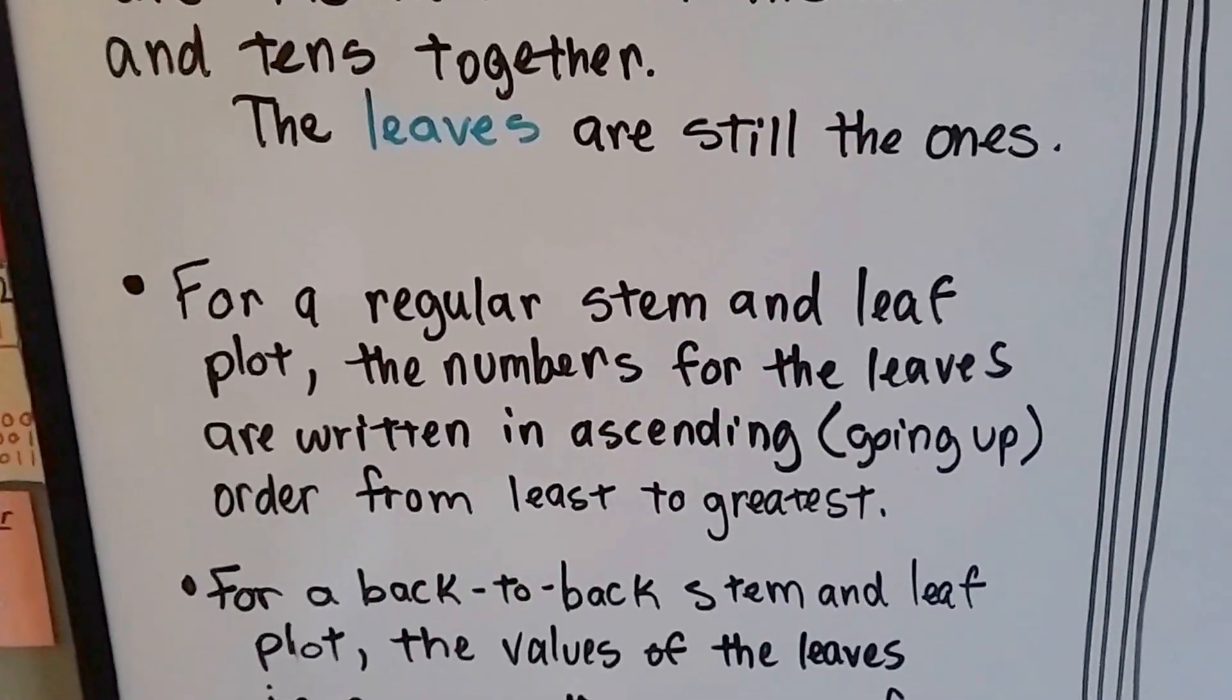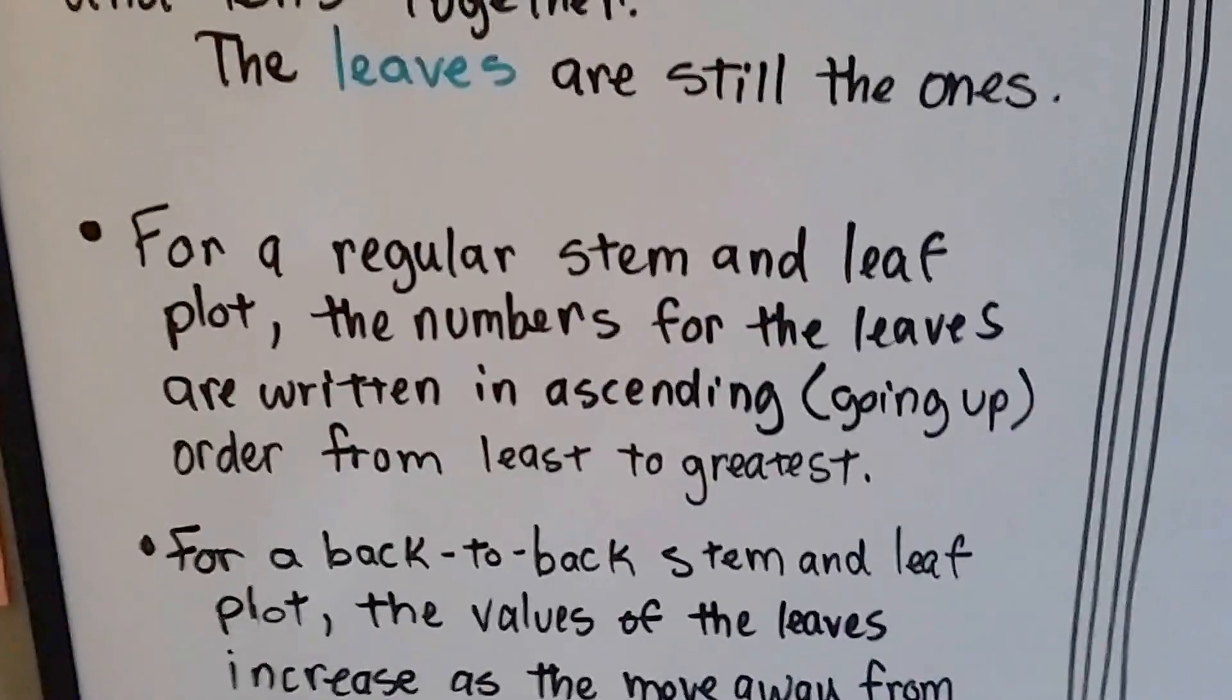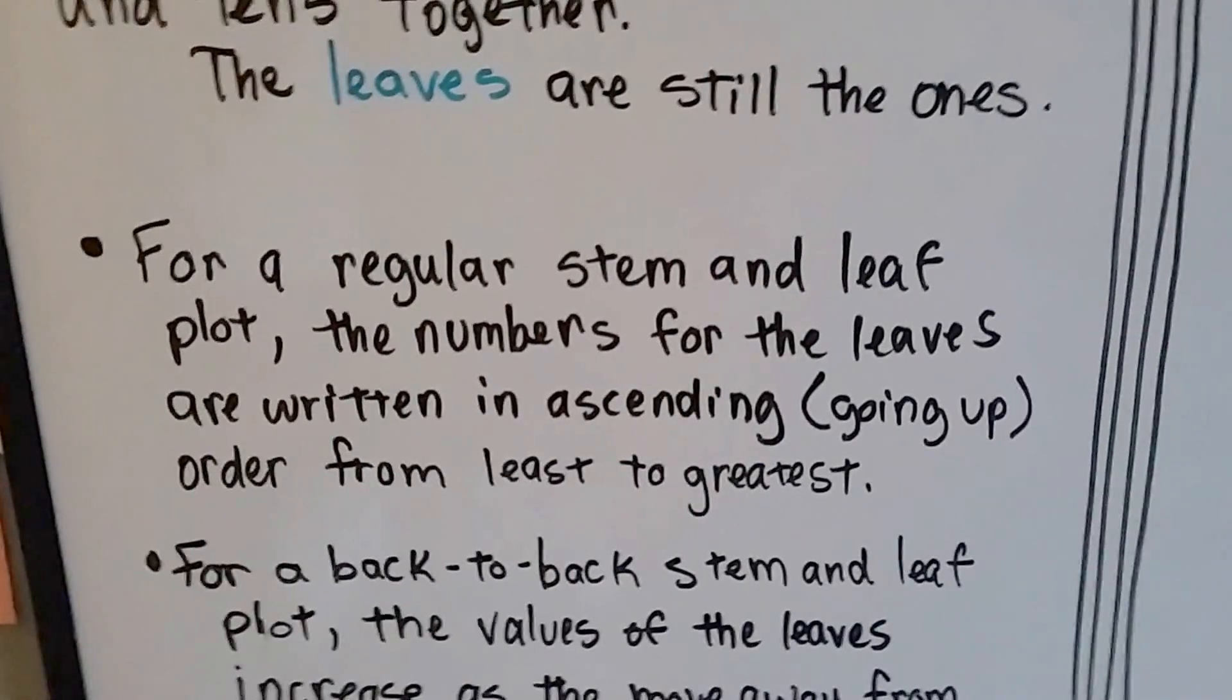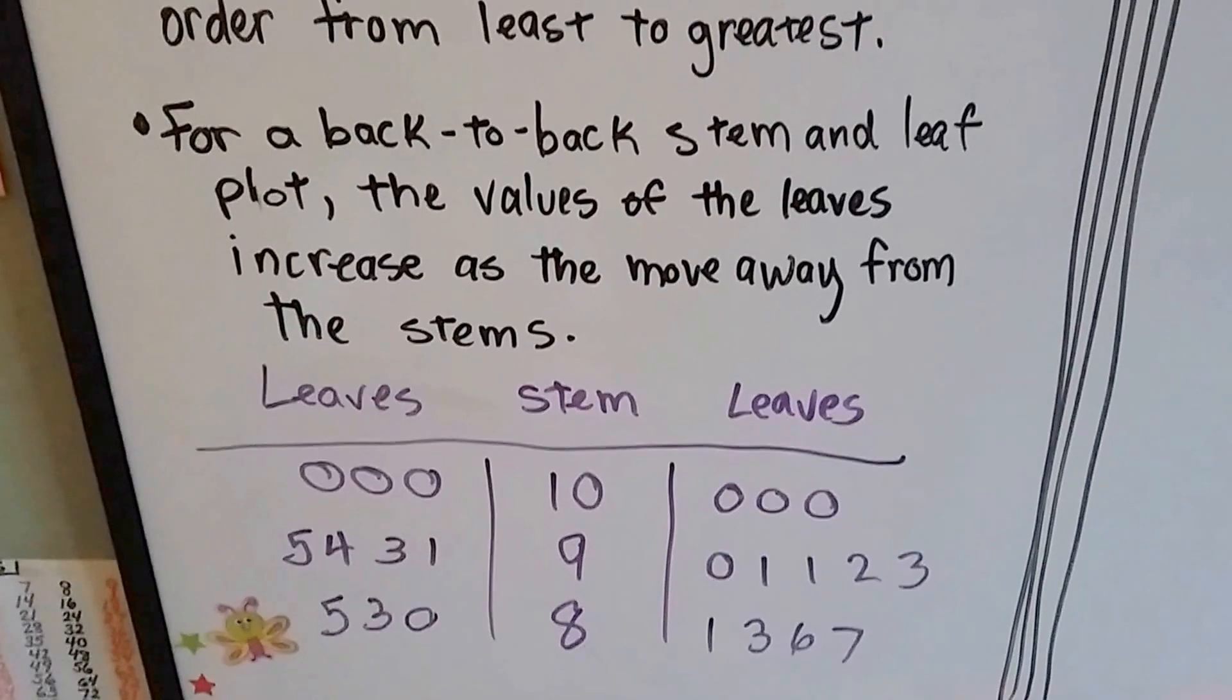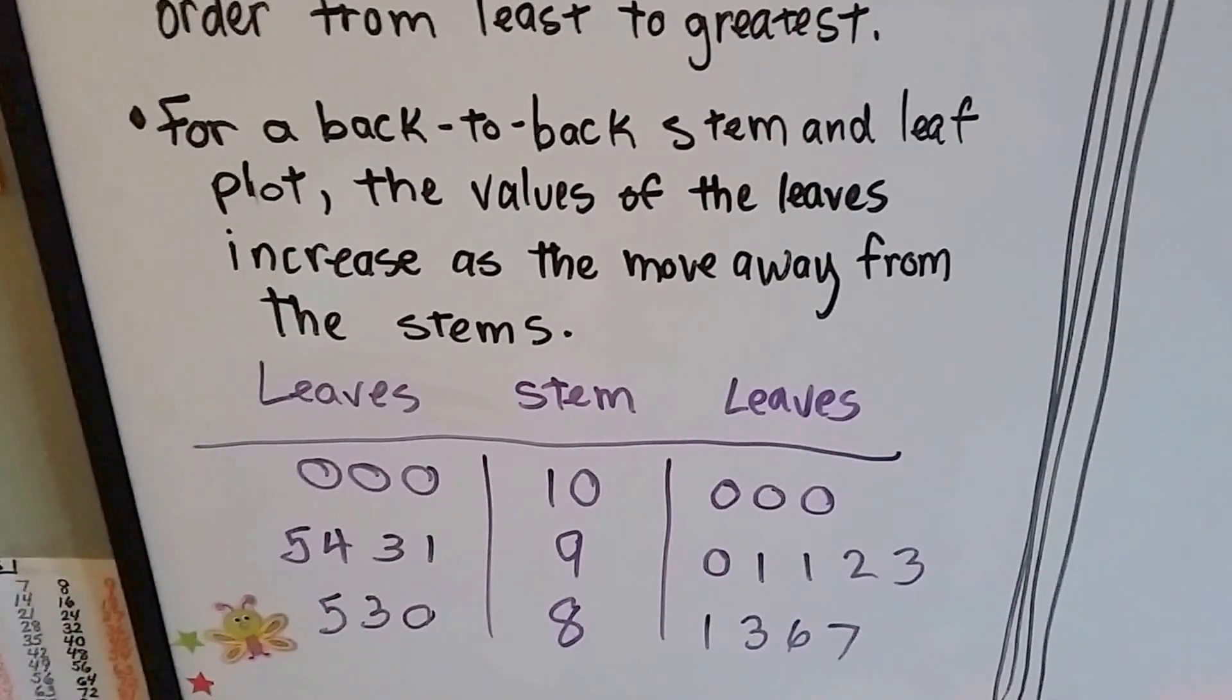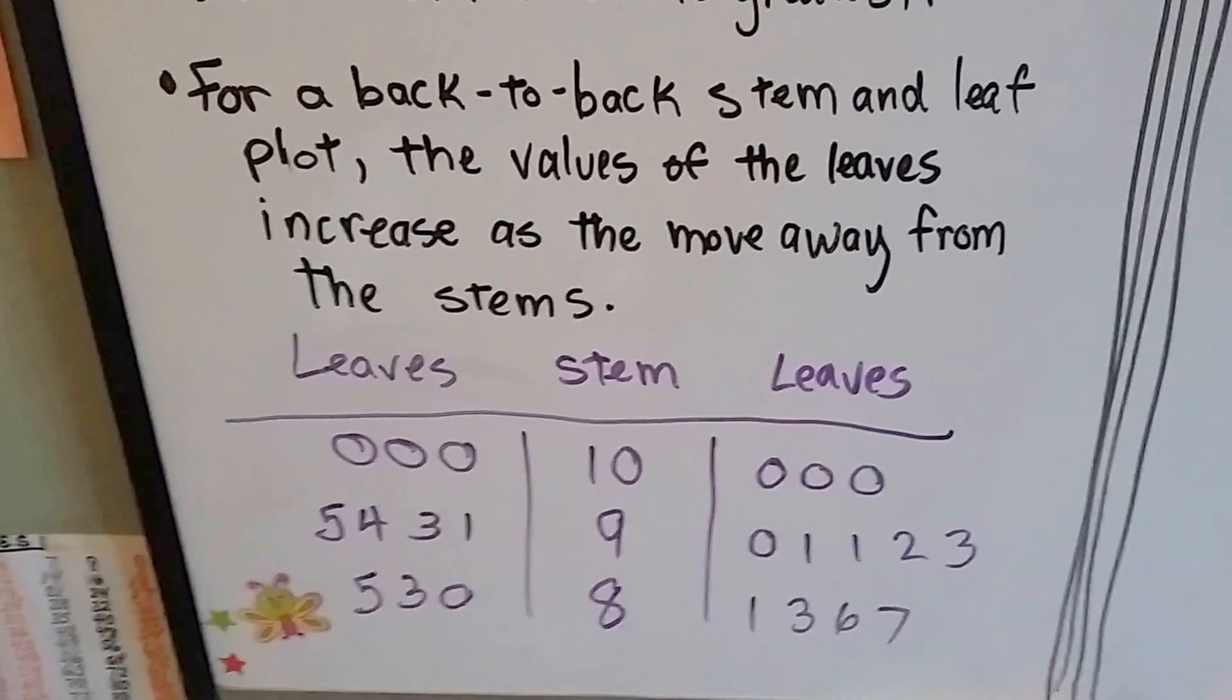For a regular stem and leaf plot, the numbers for the leaves are written in ascending, going up order from least to greatest. For a back-to-back stem and leaf plot, the values of the leaves increase as they move away from the stems.